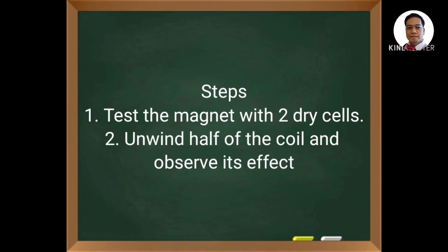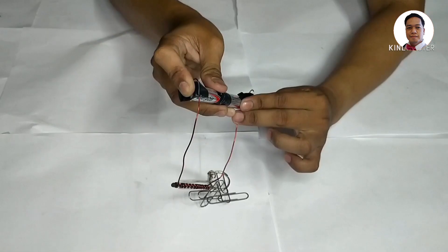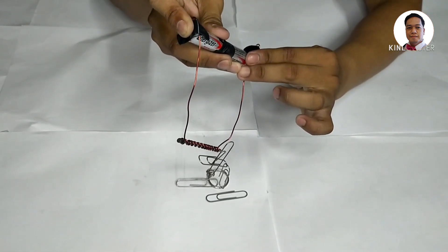Activity 2 Step 1: Test the magnet with two dry cells. Step 2: Unwind half of the coil and observe its effects.